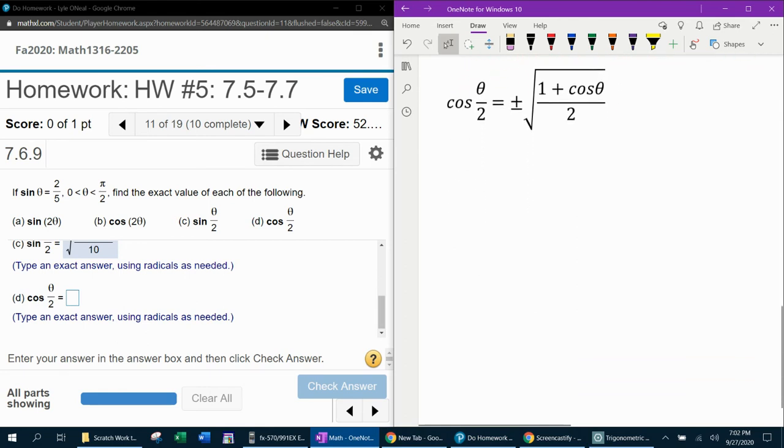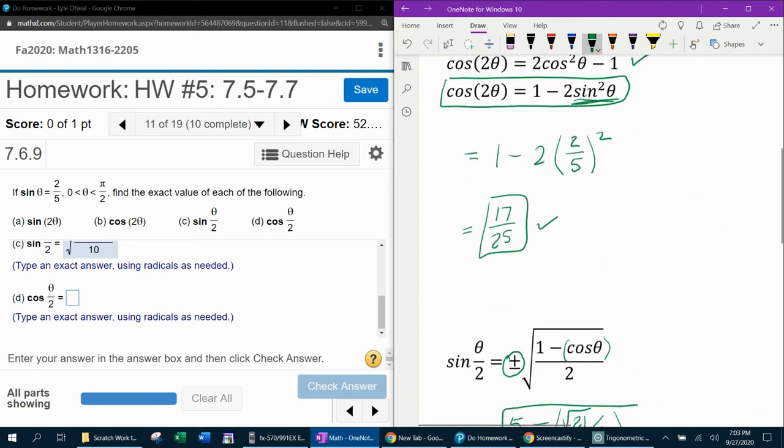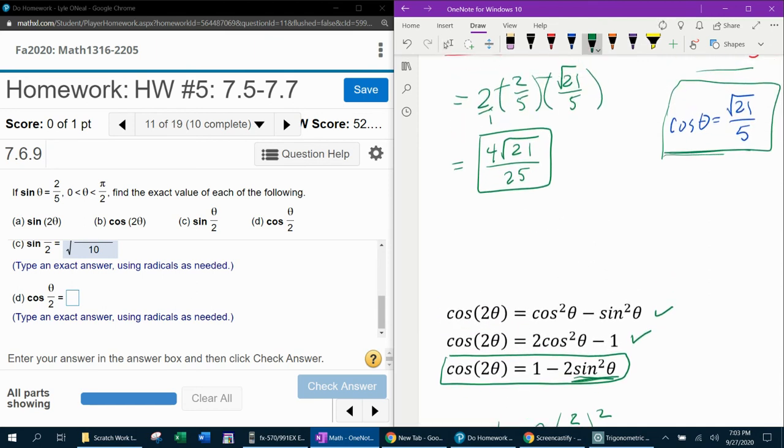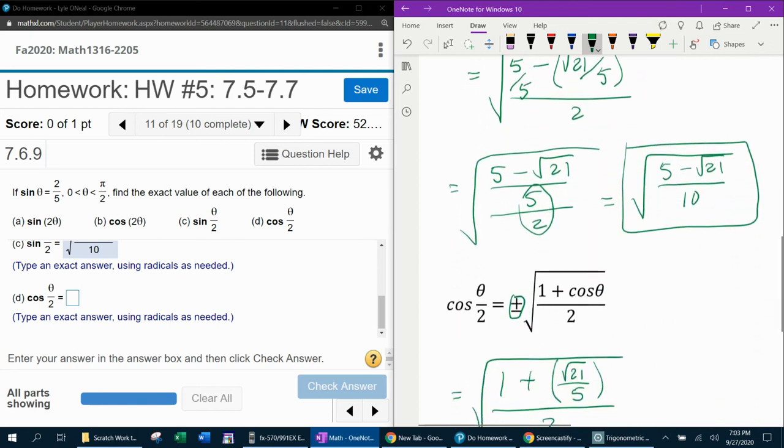And let's do one more. Cosine of theta over 2. Again, this is a half angle formula. It's got the plus or minus out front that you have to choose the correct sign. Remember, it's going to be positive because we're in quadrant 1. And so this is going to be 1 plus the square root of 21 over 5. All over 2. And if you're going, where did you get that from? Just remember, we already calculated cosine of theta up here. And so that's good for every part of this problem.